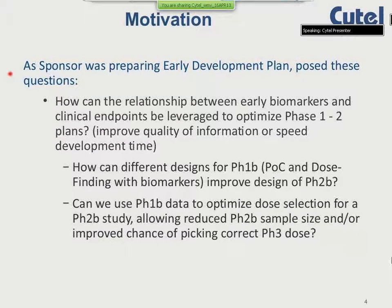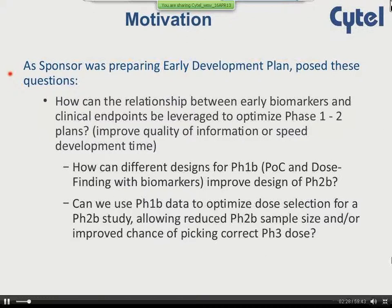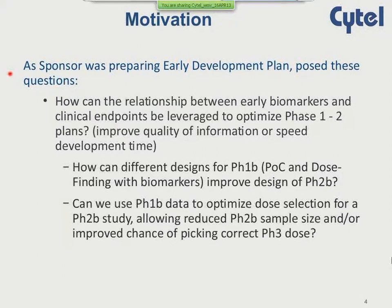The sponsor was preparing an early development plan with these key questions: How could they use the relationship between early biomarkers and the clinical endpoint to optimize their early-stage development program, improving quality of information and speed? How could different designs in Phase 1 — a proof-of-concept design and a dose-finding biomarker design — improve the Phase 2B trial design, and could Phase 1 data optimize dose selection while reducing Phase 2 sample size or improving the chance of picking the right dose for Phase 3?